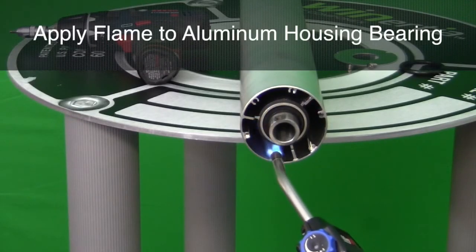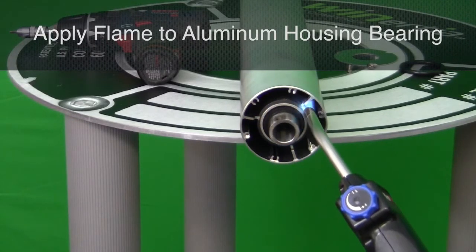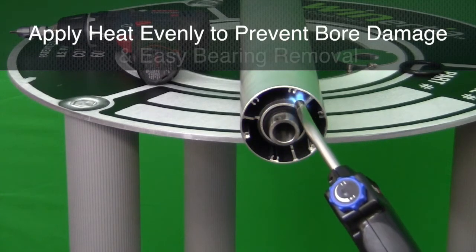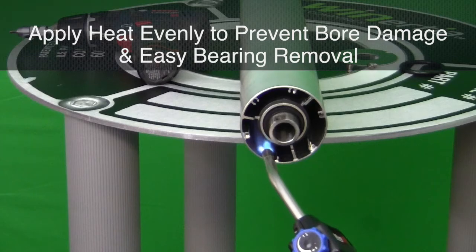Using a handheld propane torch, apply the flame to the aluminum that houses the bearing. The heat must be distributed evenly so that the bore can expand at a consistent rate to prevent bore damage and easy bearing removal.